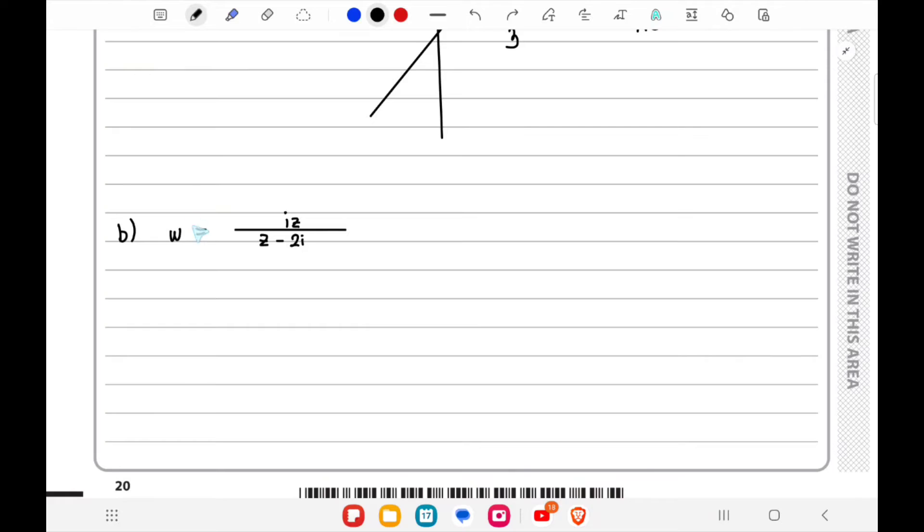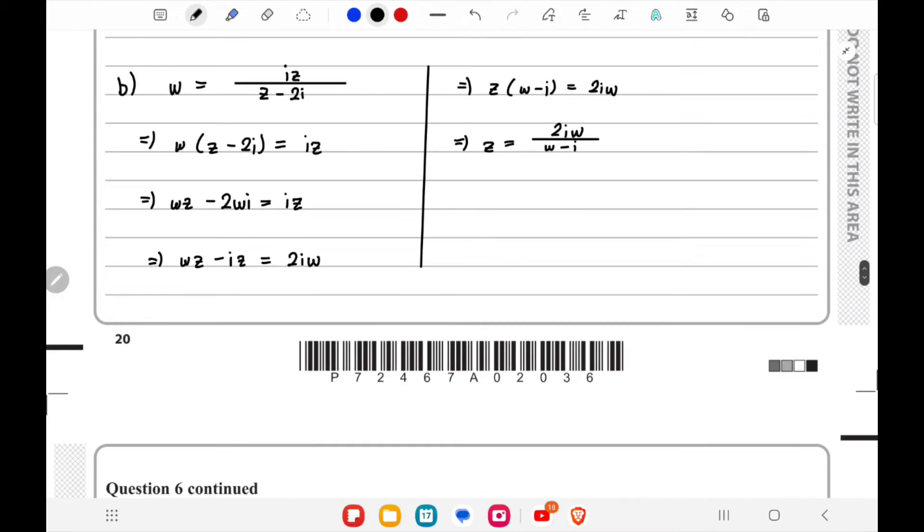This is the given equation linking w and z, so we have to take z as the subject. I'll take this on the left side, multiply w with both, then take z's on the same side. I'll move 2wy on the right and iz on the left. Now I can take z outside on the left hand side and write it as a function of w. So we have expressed z in terms of w.